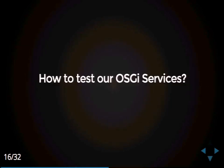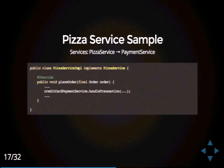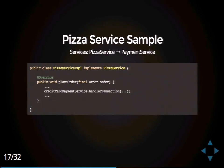We saw how easy it is to write a JUnit test with Groovy. But we are in the world of OSGI, so we need to write tests for OSGI components. Given we have a pizza service that needs a payment service — these are OSGI services — you can have a method named placeOrder where you pass in an order object. The pizza service meets the payment service, here named creditCardPaymentService, to handle the transaction and call the method handleTransaction. We want to develop an OSGI test which tests if this method is being called.